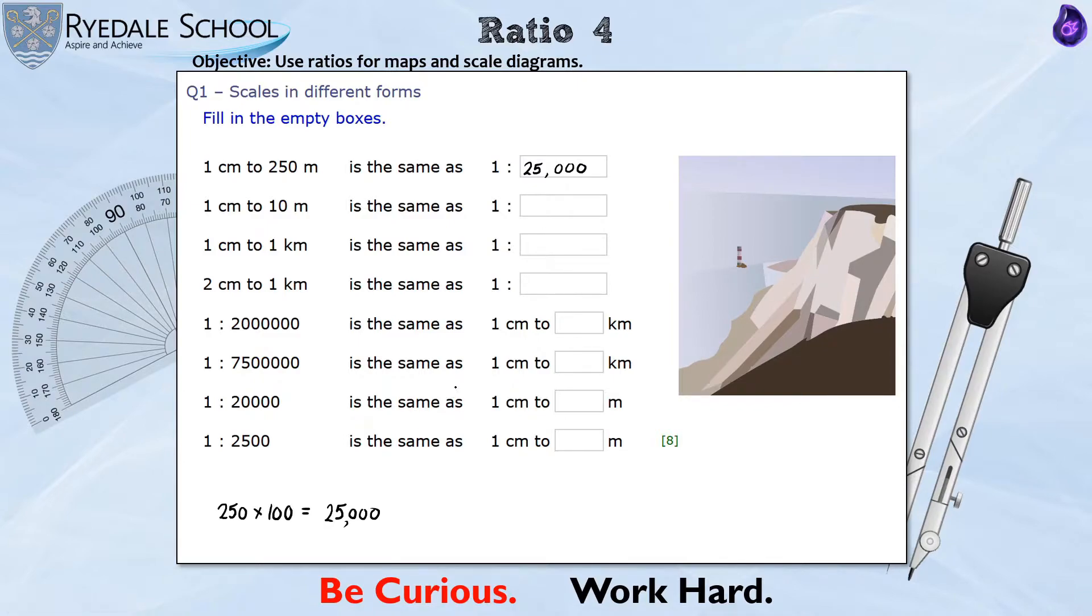Do remember of course on MyMaths your questions might be slightly different to mine. Similar on this one, 1 centimetre to 10 metres. I'm doing 10 times 100 and 10 times 100 is 1000. 1 centimetre to 1 kilometre - well this is one that I know off the top of my head. 1 kilometre is 1000 metres, and then to turn it into centimetres I need to times it by 100. So this becomes 100,000 centimetres. So it's 1 to 100,000.